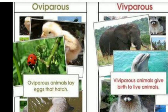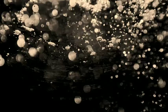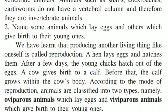Let us move towards oviparous and viviparous animals. Students, we have learned that producing another living thing like oneself is called reproduction. A hen lays eggs and hatches them. After a few days, the young chicks hatch out of the eggs. A cow gives birth to a calf; before that, the calf grows within the cow's body. According to the mode of reproduction, animals are classified into two types: oviparous animals, which lay eggs, and viviparous animals, which give birth to young ones.